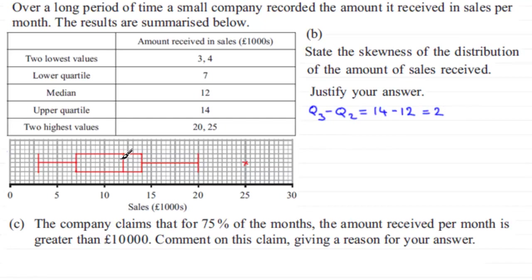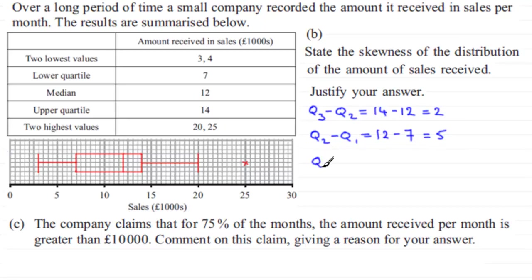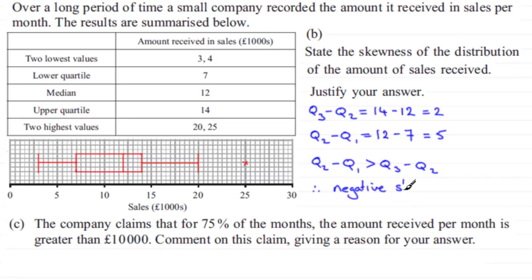And the difference between the median Q2 and the lower quartile Q1 gives us 12 minus 7, which is a width of 5 units. So clearly Q2 minus Q1 is a larger width than Q3 minus Q2, and therefore we have negative skew. That is the justification for our answer.